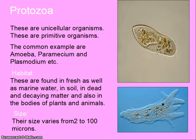Protozoa. These are unicellular, primitive organisms. Common examples are amoeba, paramecium, and plasmodium. They are found in fresh as well as marine water, in soil, in dead and decaying matter, and also in the bodies of plants and animals. Their size varies from 2 to 100 microns.